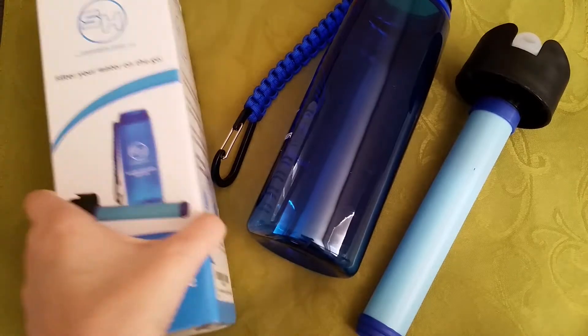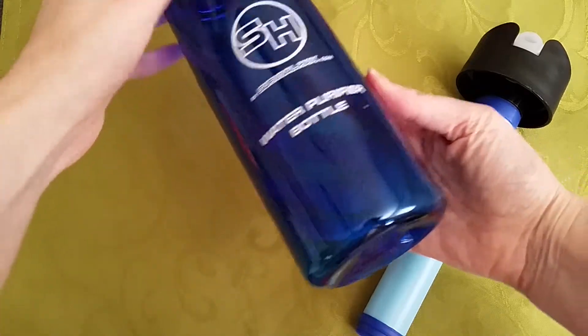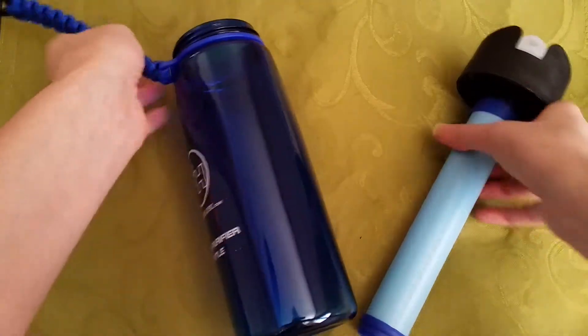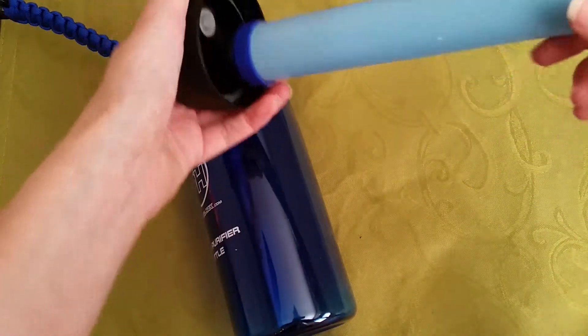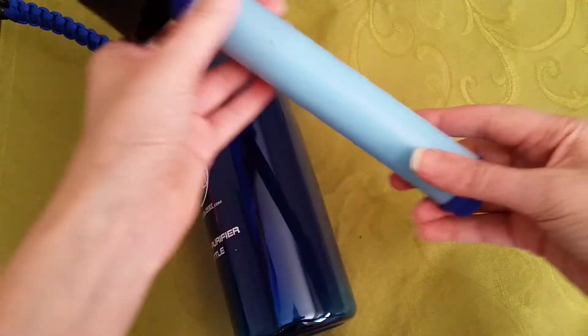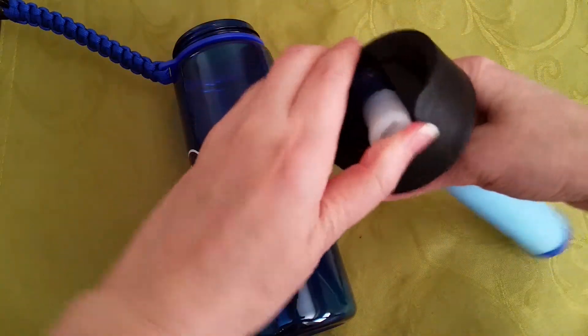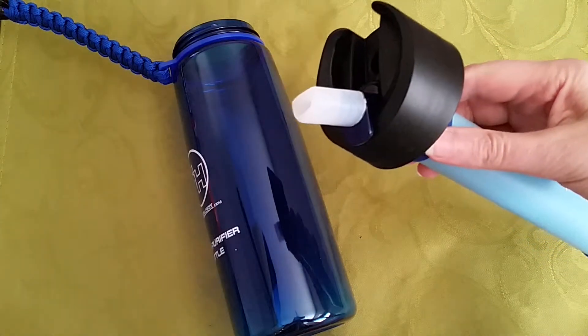This one here, this is the box that it comes in. This is what the bottle looks like. It is 22 ounces, so it's a really nice size water bottle. Very sturdy, very large filter straw here. And then the cap here. This is the drinking spout for it.